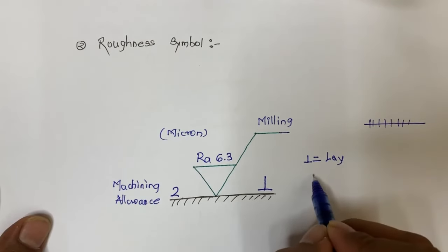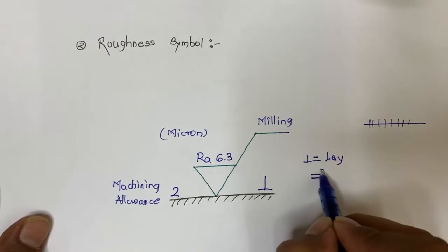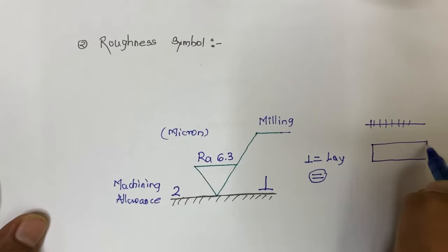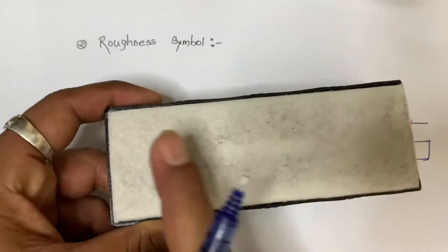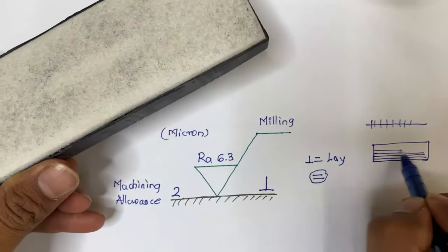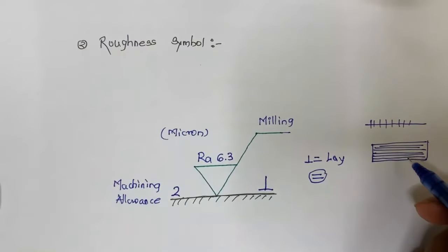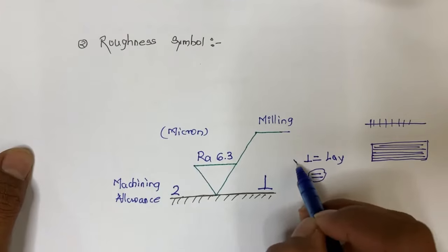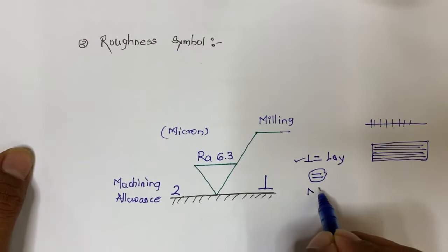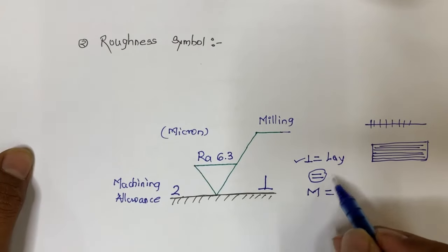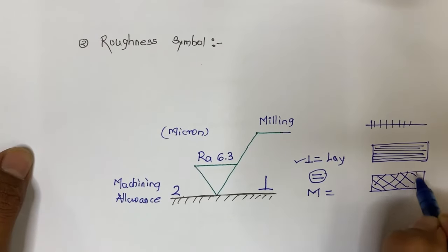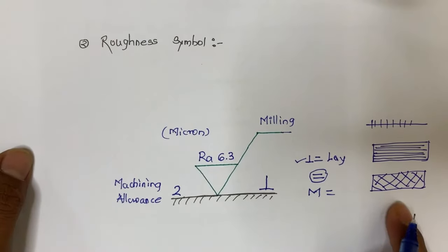The second notation represents a surface viewed in top view. If the lay directions run in this way — parallel to the viewing direction — the lines are considered parallel lay. If lines run the other way, it is considered perpendicular lay. There is also a possibility that the third notation 'M' can be used, which represents multi-directional lay. For example, if a surface has a multi-directional pattern, it is indicated as M.